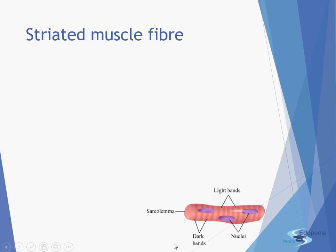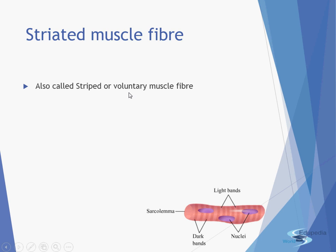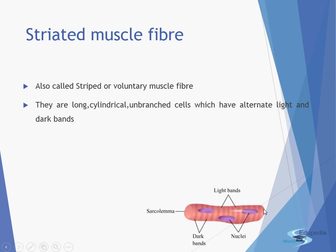Let us first start with the striated muscle fiber. In the typical structure of the striated muscle fiber, you can see alternate dark and light bands and many nuclei — nucleus is the singular form and nuclei is the plural form. The layer surrounding this muscle is known as the sarcolemma. They are also known as striped or voluntary muscle fibers — striped because of their structure and voluntary because these muscles are under our control. They are long, cylindrical, unbranched cells with alternate light and dark bands, and the ends are blunt — a main distinguishing feature.